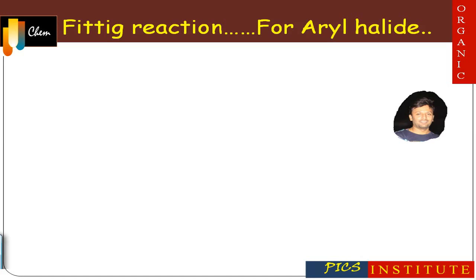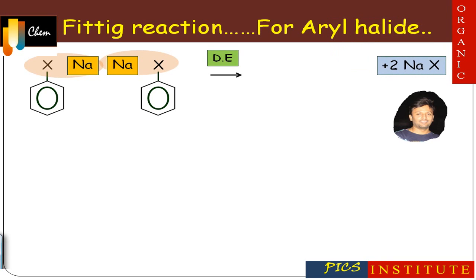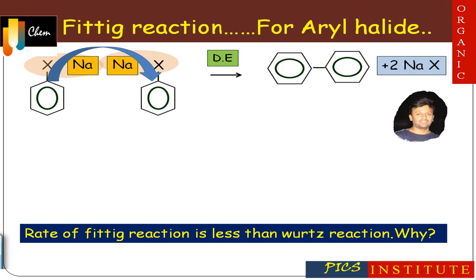The Fittig reaction is similar to the Wurtz reaction, but the only difference is that it involves use of aryl halides. Two molecules of aryl halides react with sodium in the presence of dry ether, resulting in removal of sodium halide; both benzene rings combine together to form biphenyl. So if we use aryl halide the reaction is Fittig, and if we use alkyl halide then the reaction is Wurtz.